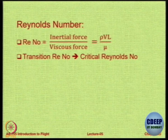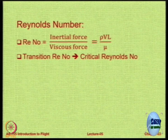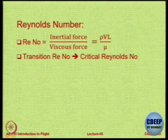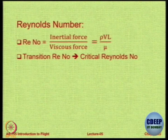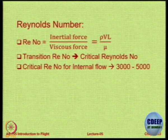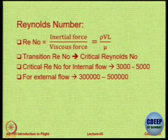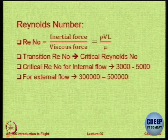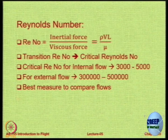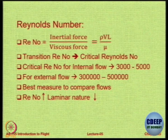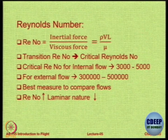The Reynolds number is the key — not the shape, not the fluid properties alone, not the angle. It decides whether flow will be laminar or turbulent. For internal pipe flow the critical Reynolds number is between 3,000 and 5,000. For external flow it is around 300,000 to 500,000. It is the best measure to compare two flows, and as Reynolds number increases, the laminar nature reduces until you reach the critical value beyond which flow becomes turbulent.